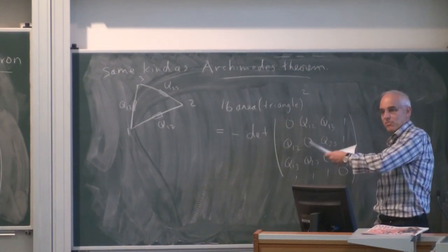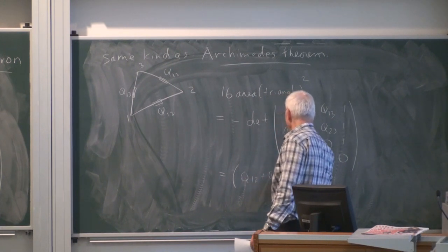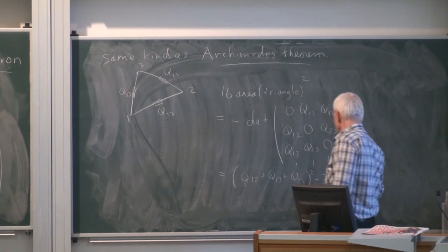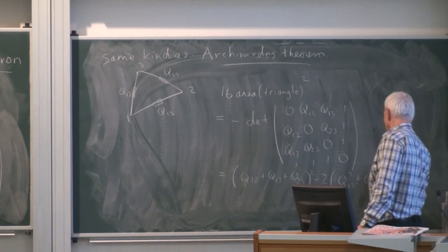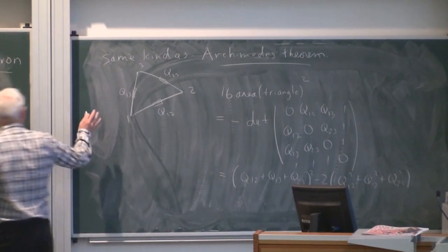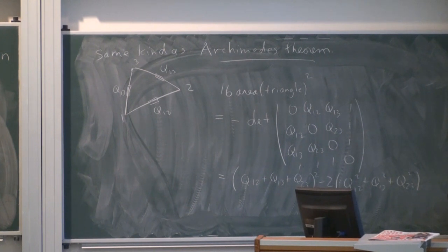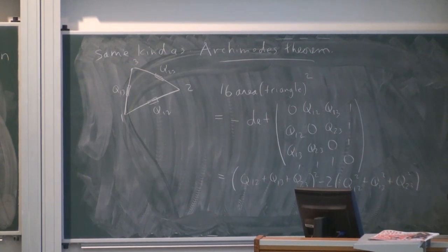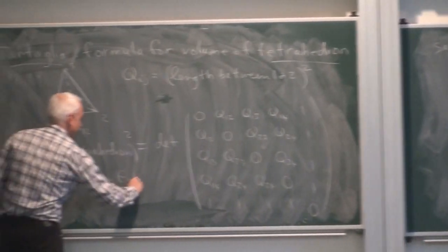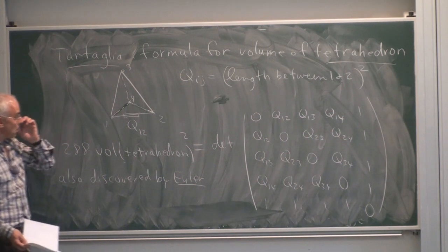I gave you this as a polynomial expression earlier. It turned out to be (Q₁₂ + Q₁₃ + Q₂₃)² minus 2(Q₁₂² + Q₁₃² + Q₂₃²). That formula for the area of a triangle is extended here to the volume of a tetrahedron purely in terms of the six sides. This was also discovered by Euler, and for many years I was under the impression it was Euler's discovery, but only relatively recently have I realized that Tartaglia discovered it first.